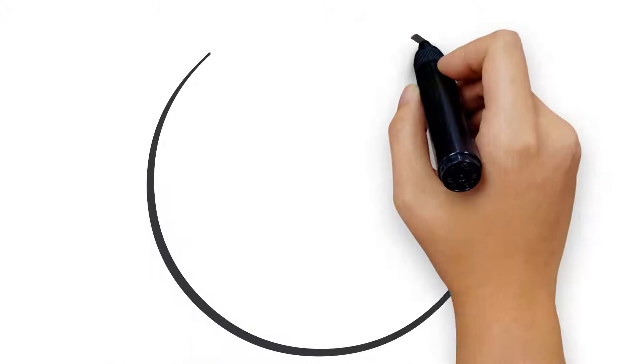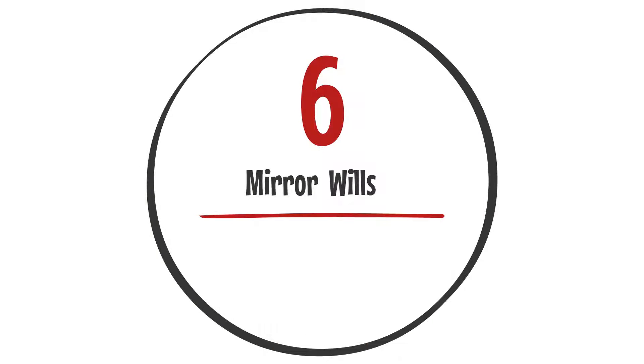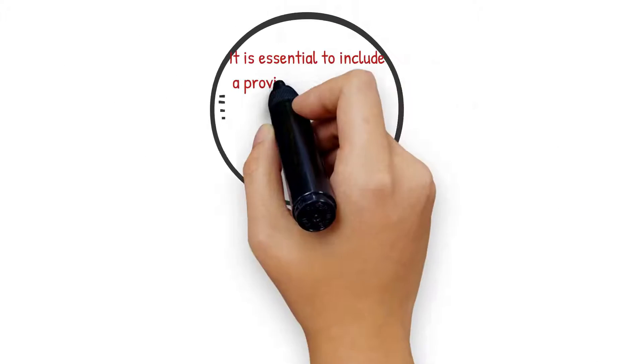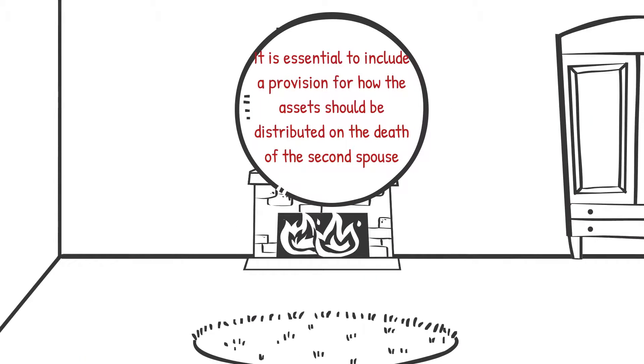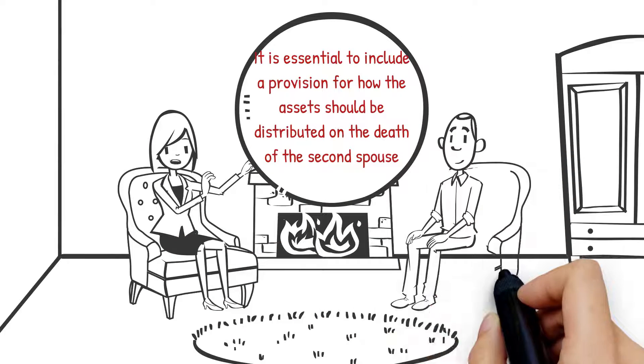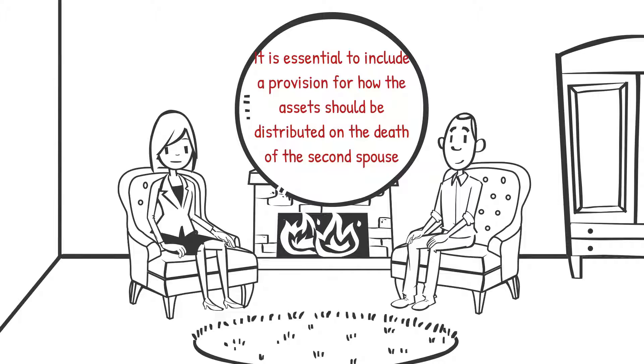Mirror wills. Another problem that can arise is when a couple make mirror wills, a type of will structure where both partners leave their assets to each other. To avoid an intestacy, it is essential that these wills include a provision for how the assets should be distributed on the death of the second spouse.